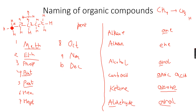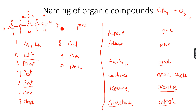What if we take this as the terminal carbon atom instead of this one? If you number one, two, three, four, and five, you can see the situation is the same - the methyl group is on the third carbon atom. The closest the methyl group can be to the terminal carbon atom is three carbon atoms away, so this becomes 3-methylpentane because it's on the third carbon atom from the terminal carbon atom, and it's an alkane.